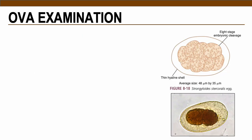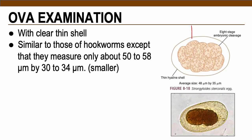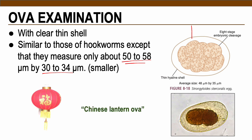Ova of Strongyloides stercoralis are very similar to hookworm eggs — clear thin shells surrounding the embryo — but relatively smaller at 50–58 micrometers by 30–34 micrometers. Some sources describe these as Chinese lantern ova due to their similarities; they are also called Chinese because the pathology is known as Cochin-China diarrhea, to be discussed later.